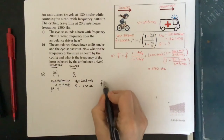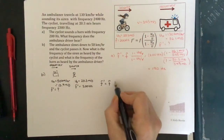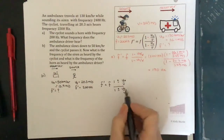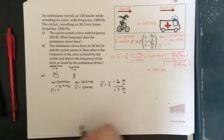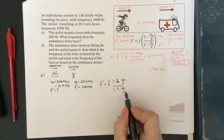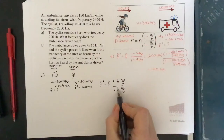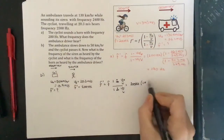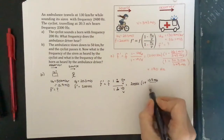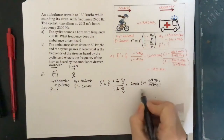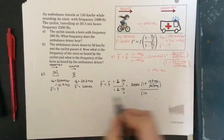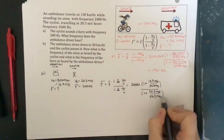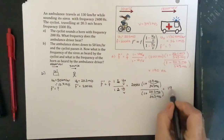Writing our Doppler equation: F′ = F times (1 ± u₀/v) divided by (1 ± uₛ/v). The observer goes towards the source, so we'd hear a higher frequency — that's a plus in the numerator. The source goes away from the observer, resulting in a lower frequency, so we need a bigger denominator — also a plus. Plugging in: 200 hertz times (1 plus 13.9 divided by 343), divided by (1 plus 20.3 divided by 343). The result is 197 hertz.